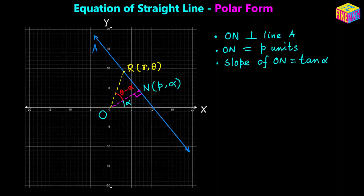So the slope of the line segment ON would be tangent of alpha. Now let's assume that there is a moving point, or a variable point, on the straight line which is R, and its polar coordinates are lowercase r comma theta.